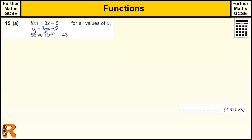In this case we're told to solve f of x squared equals 43. So normally when we do a function, if I was asked to do f of 2, then I would just do 3 times 2 minus 5, which is going to be 1 because we've got 6 take away 5, because I'm just replacing the x with the 2.